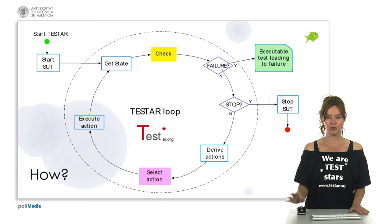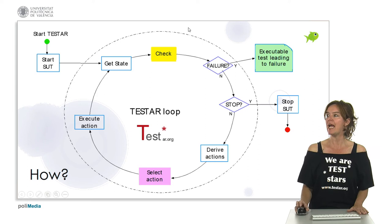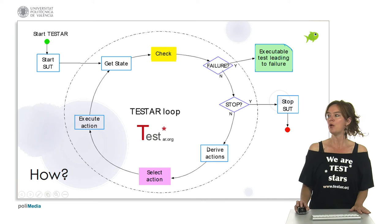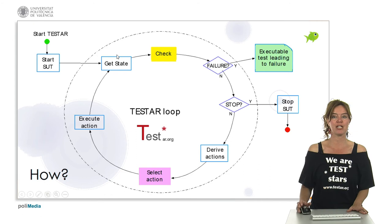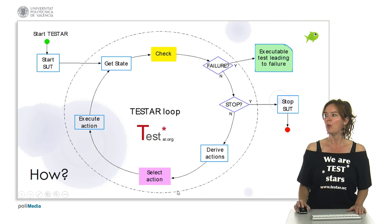Here is the Test* loop used to generate tests. We start up the system under test, get the current GUI state — all widgets and their properties — and check that state for any failures. If there's a failure, we have a test sequence leading to a failure. If not, we derive actions from the current state, select one, execute it, and move to the next state. That state is then checked again for failures. If no failure is found, we continue: getting the state, checking the state, deriving actions, selecting actions, and executing them.